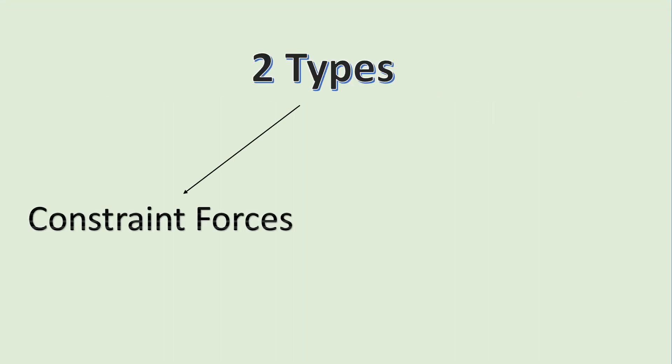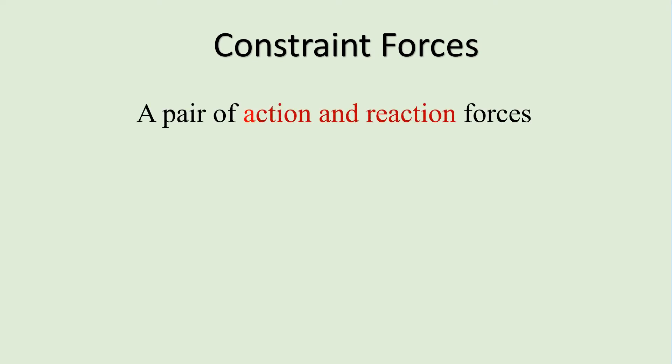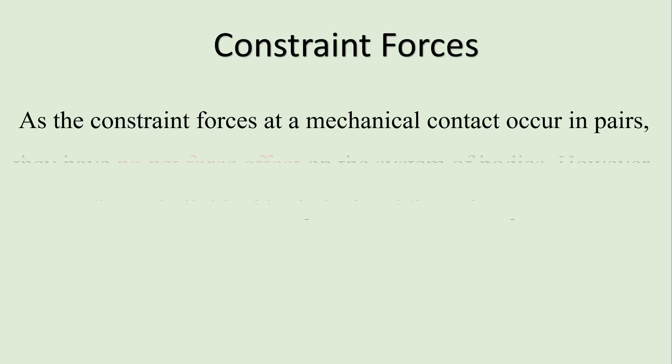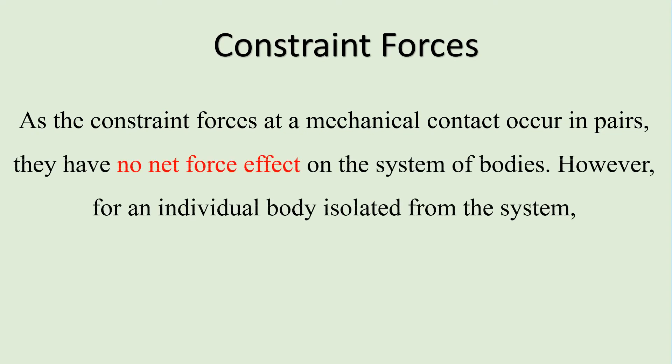There are basically two types of forces that act on a machine component: constraint forces and applied forces. Constraint forces are a pair of action and reaction forces which constrain two connected bodies to behave in a particular manner. As constraint forces at a mechanical contact occur in pairs, they have no net force effect on the system of bodies. However, for an individual body isolated from the system, only one of each pair of constraint forces has to be considered.